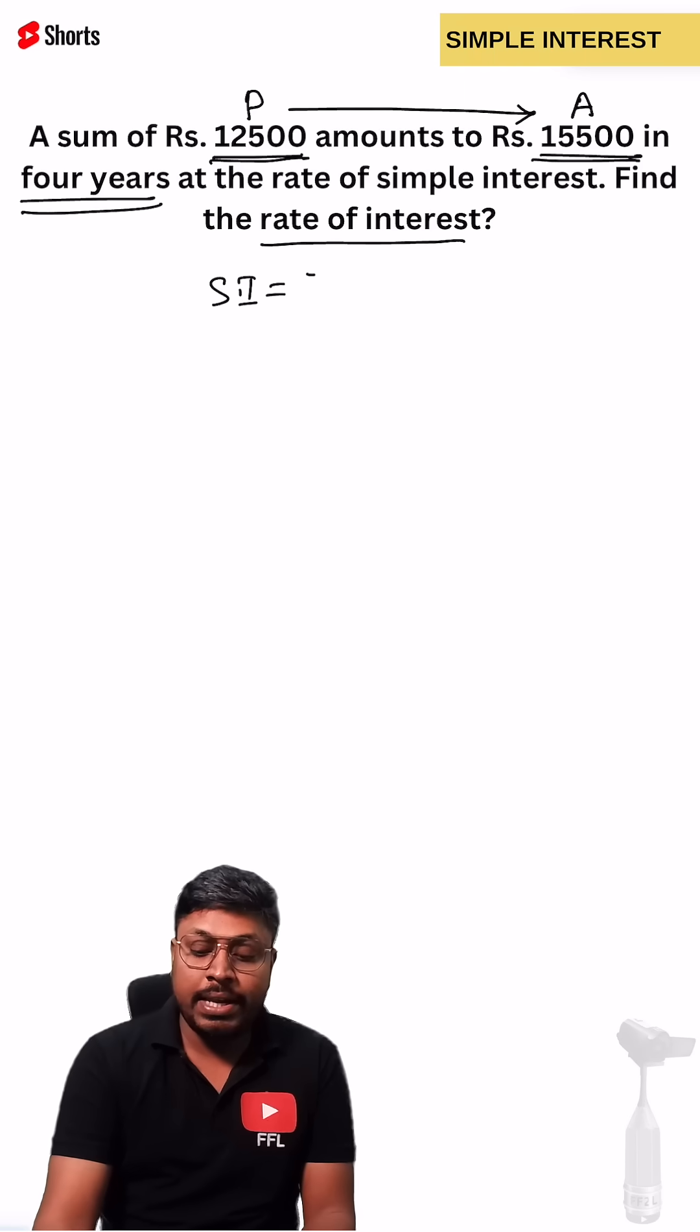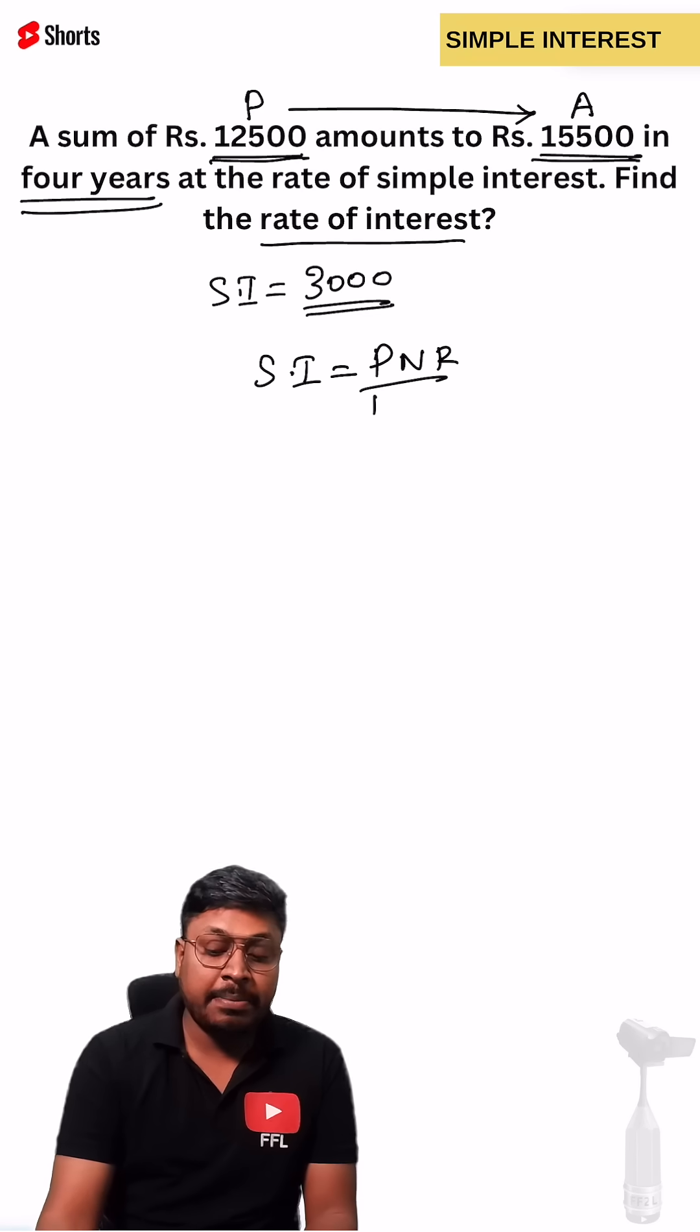Simple interest for 4 years is 3,000. We know the basic formula: simple interest equals PNR by 100.